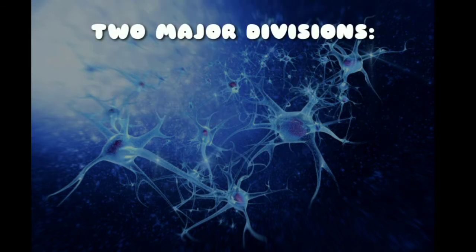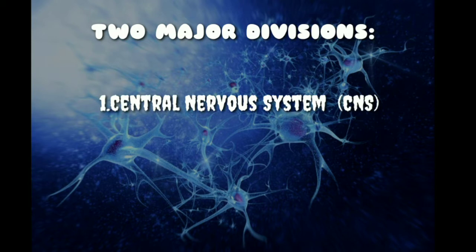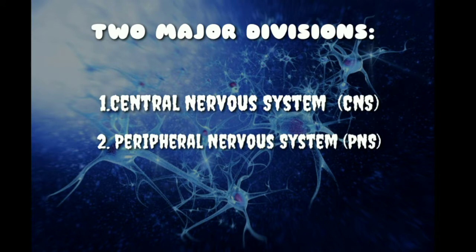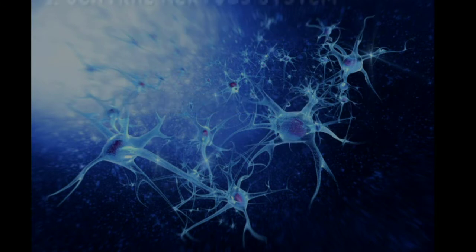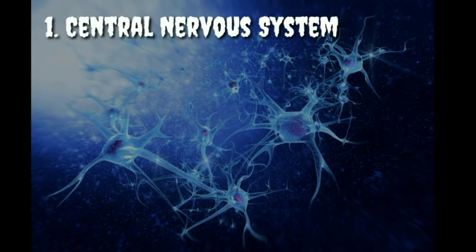The nervous system has two major divisions: the central nervous system, or CNS, and the peripheral nervous system, or PNS.